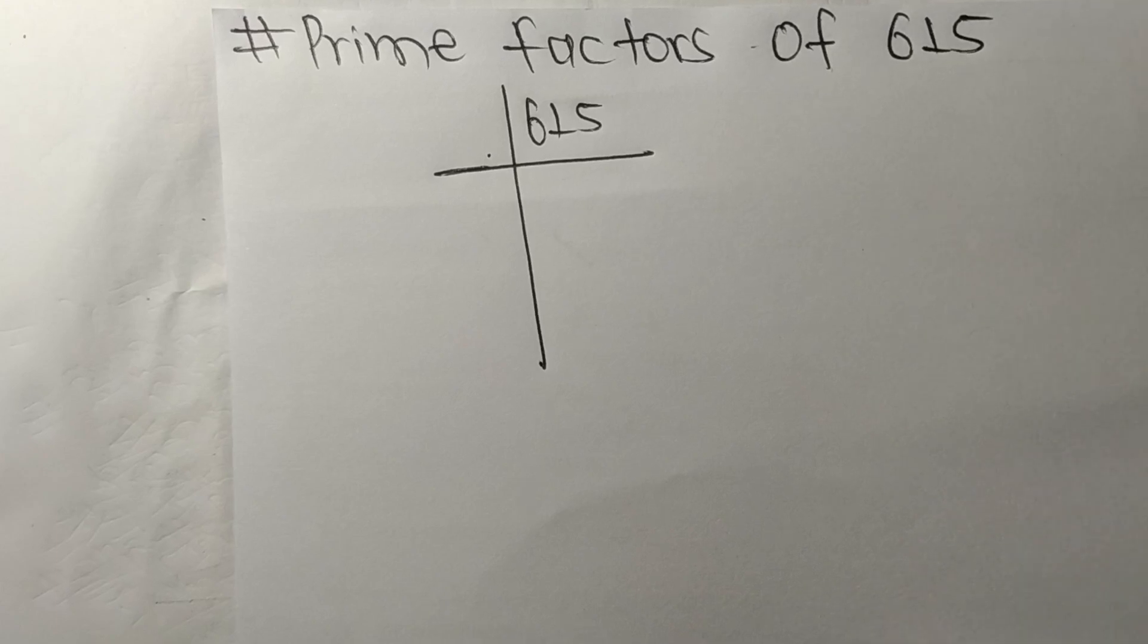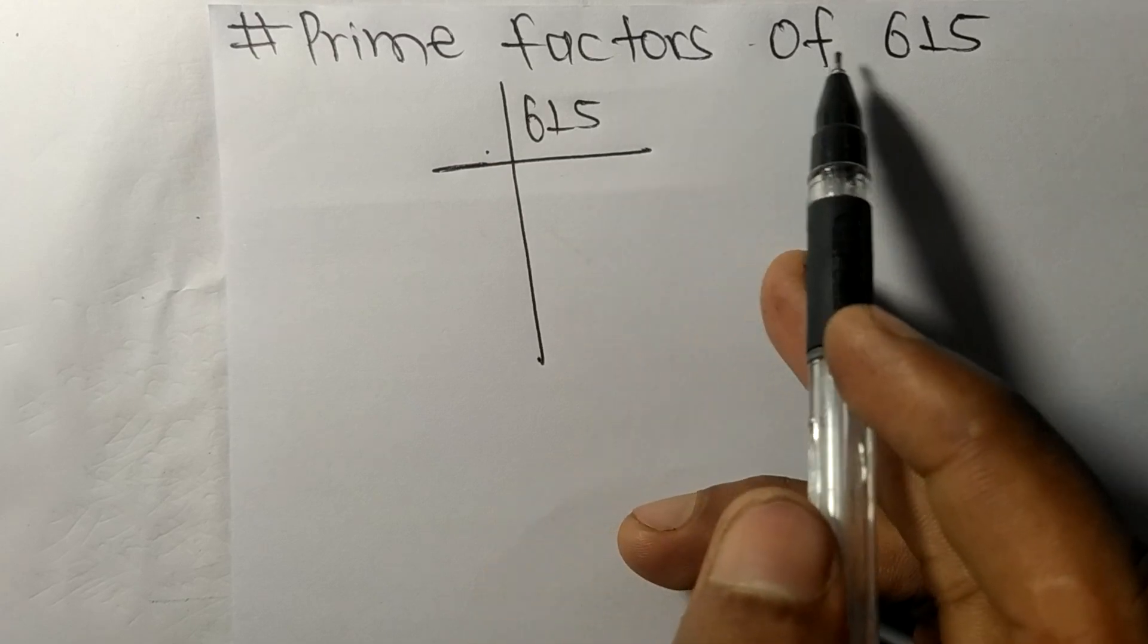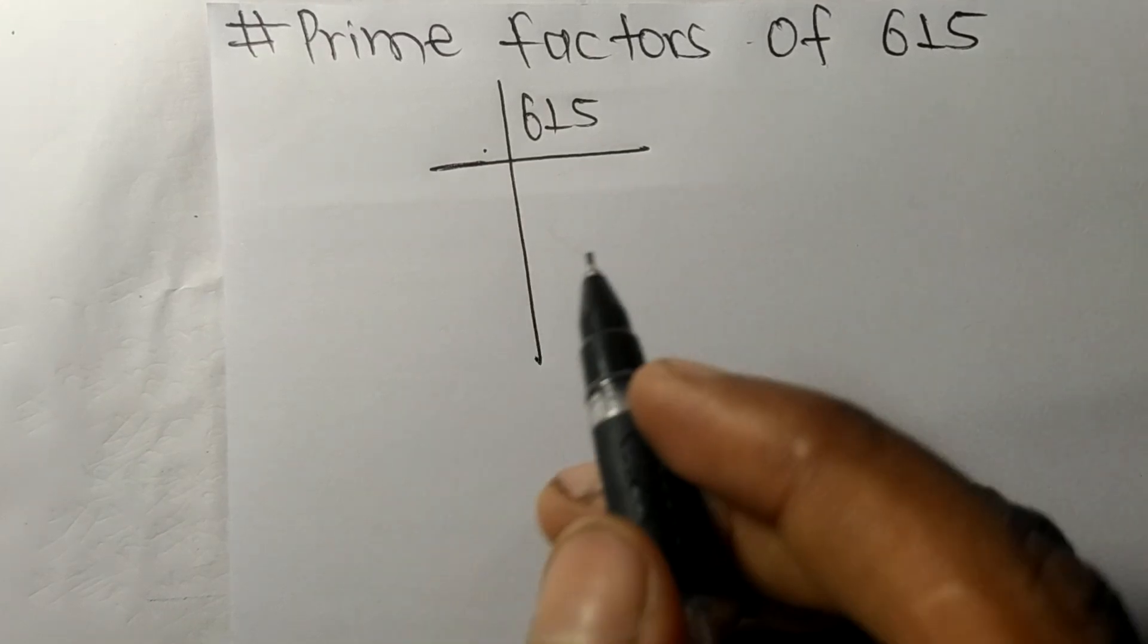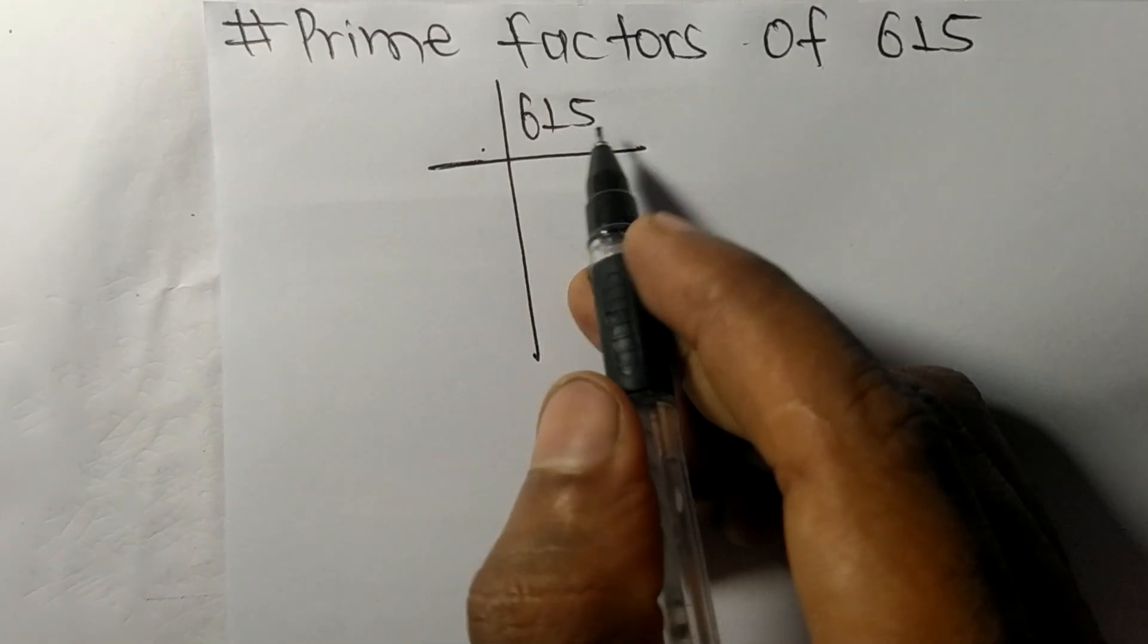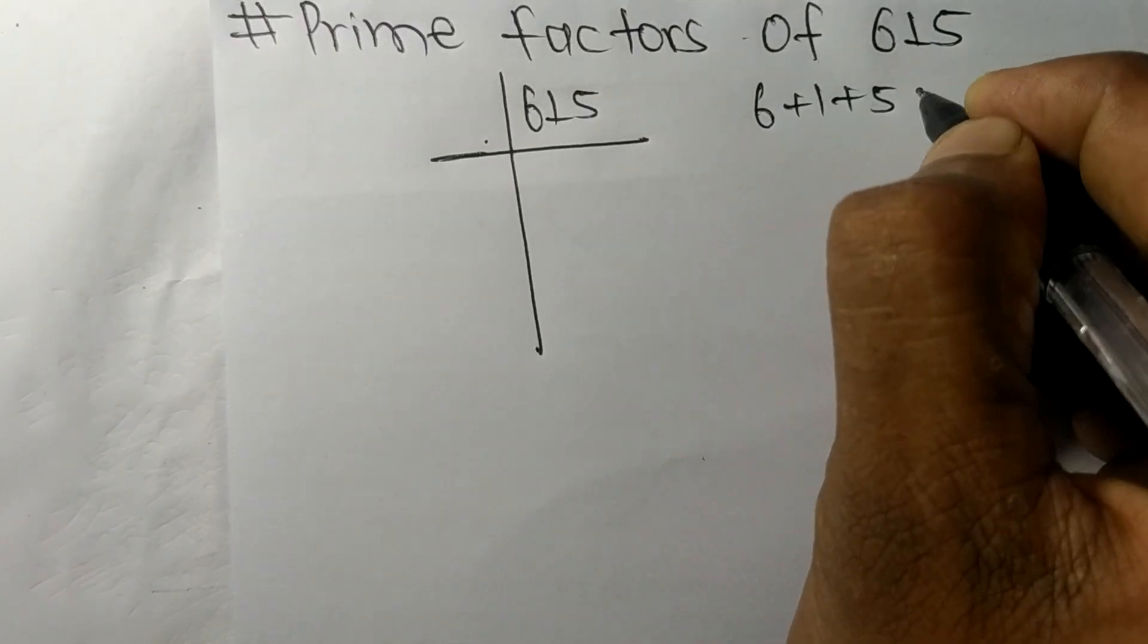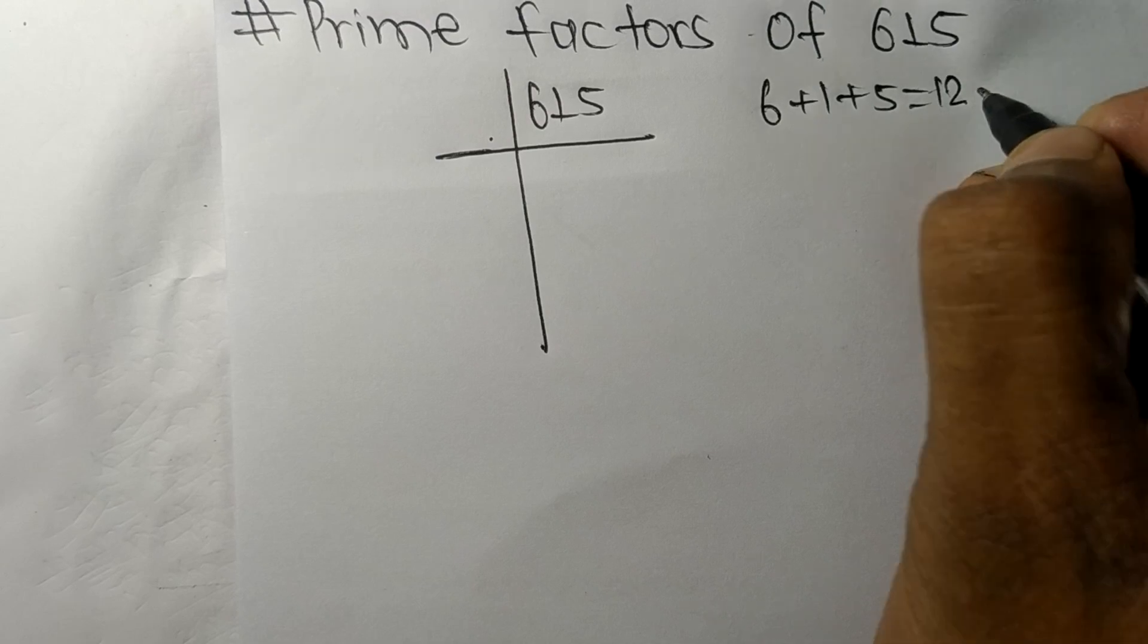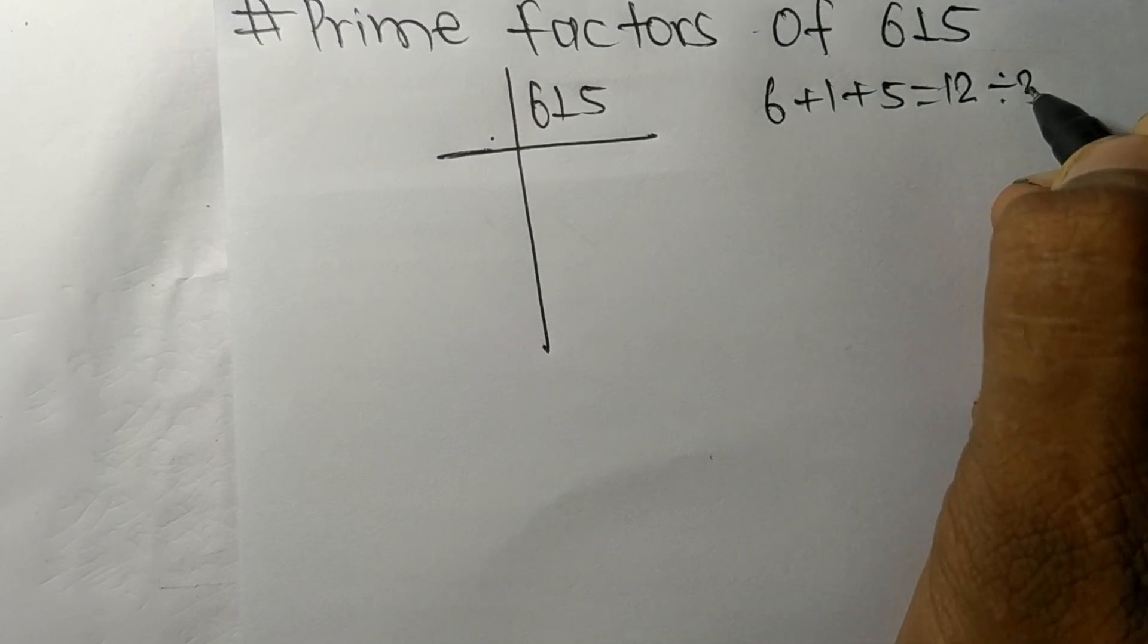Today in this video we shall learn to find the prime factors of 615. When we add all these numbers, that is 6 plus 1 plus 5, then we get 12, and 12 is exactly divisible by 3.